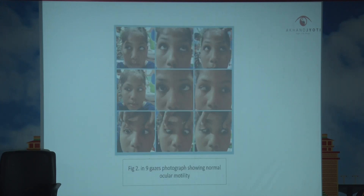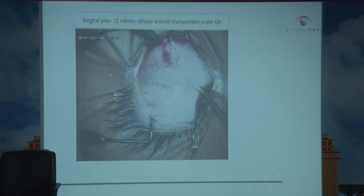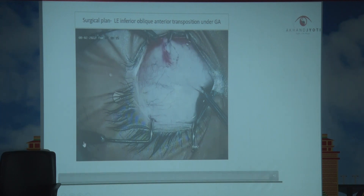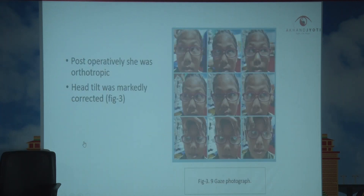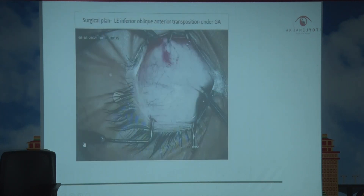This is a photograph showing nine gazes with normal ocular motility. A surgical plan of left eye inferior oblique anterior transposition under general anesthesia was made.